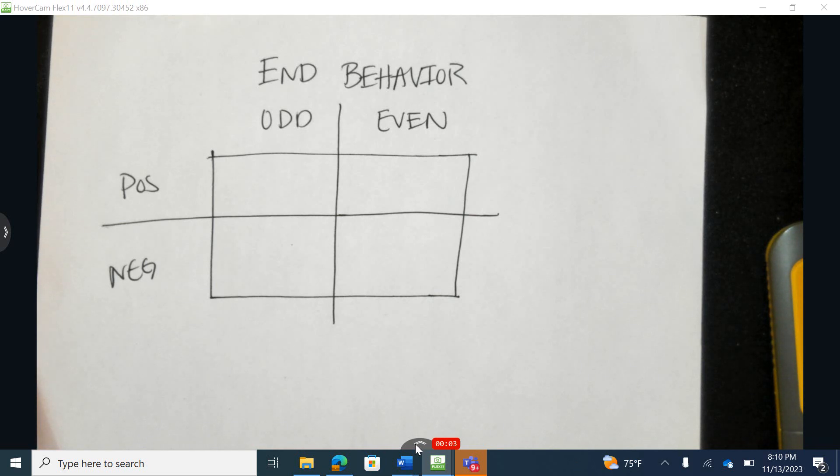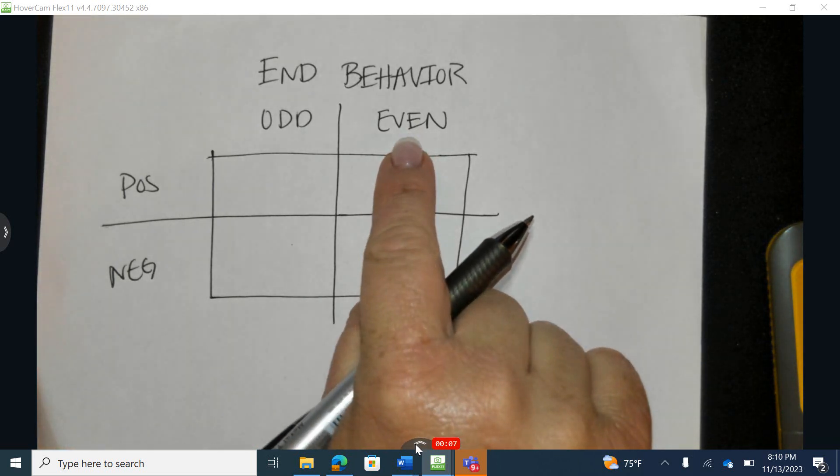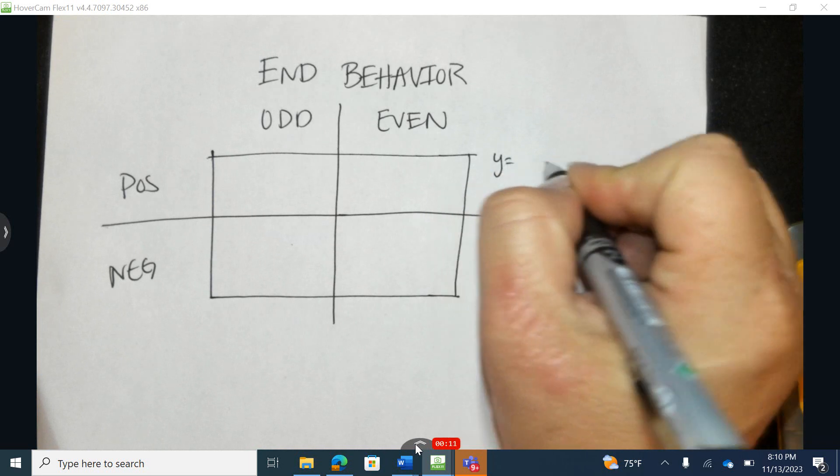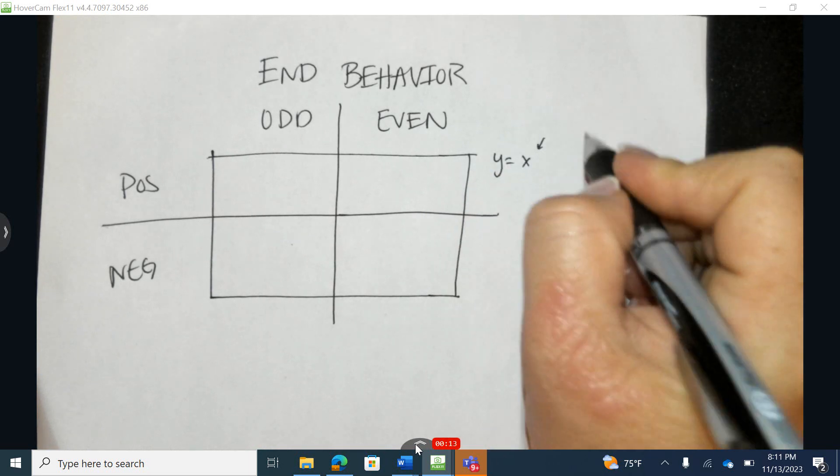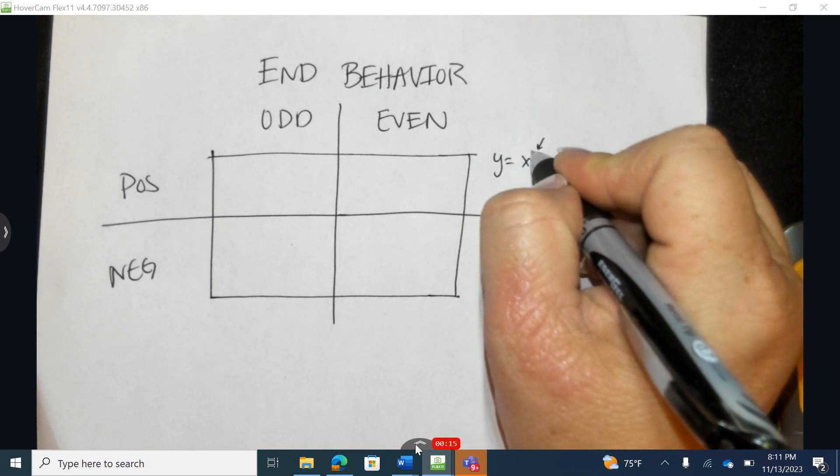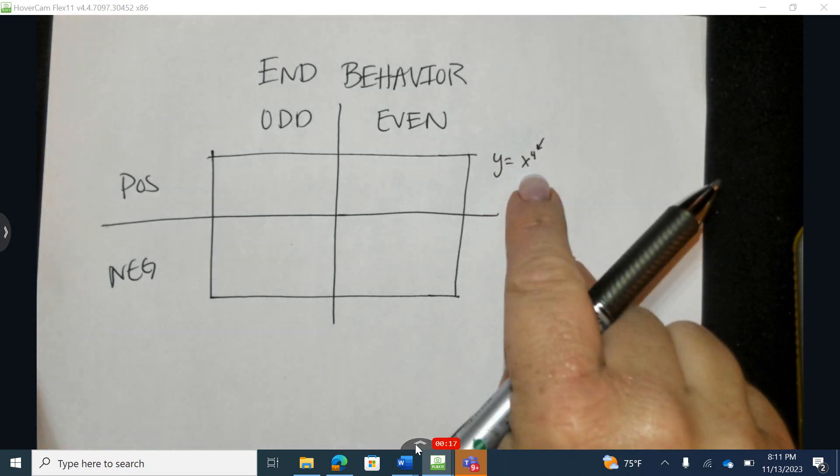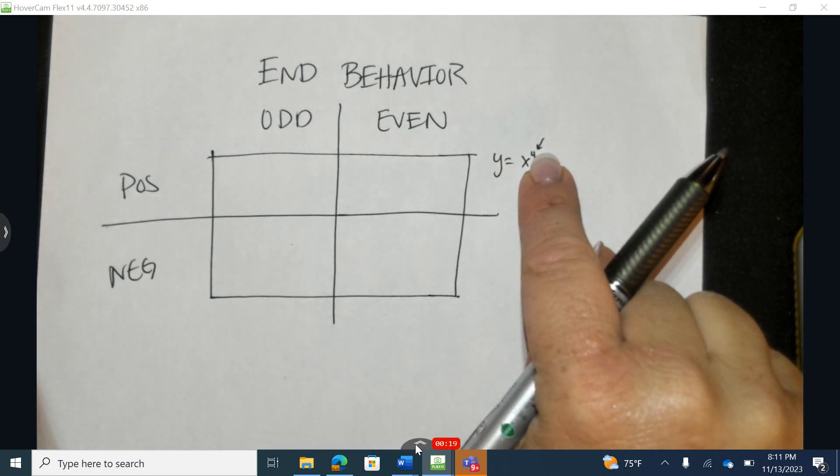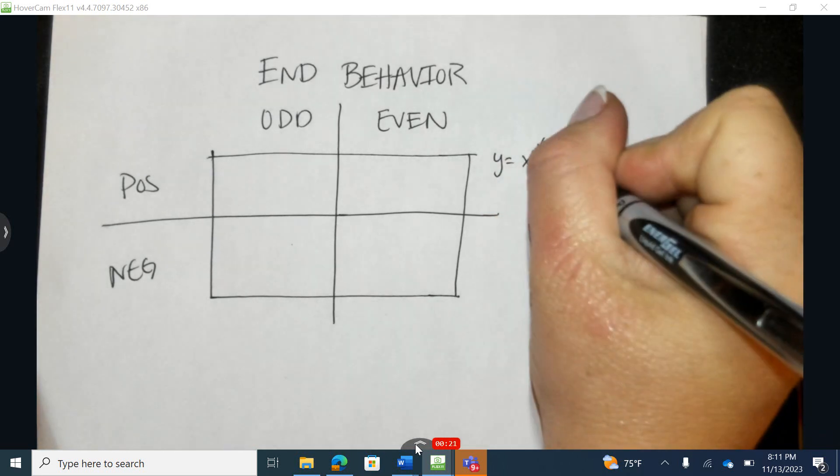Let's start by reviewing end behavior of polynomial functions. When we say a polynomial function is even, we're saying that the exponent, the highest exponent on a variable, for instance, x to the fourth, would represent an even degree.